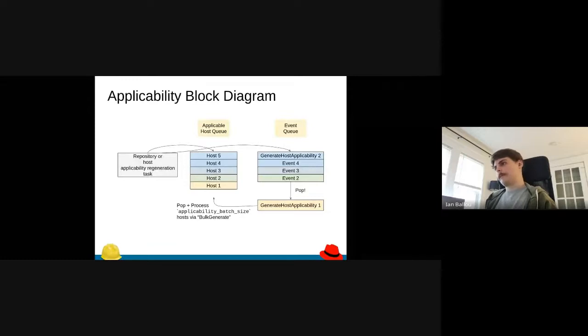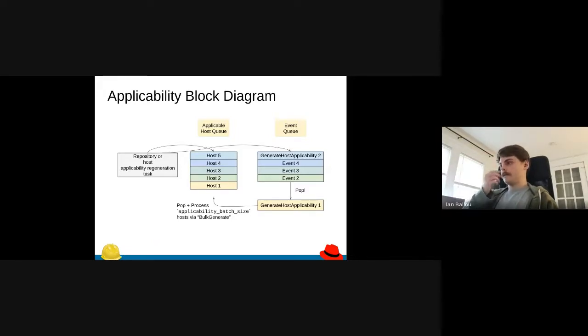This event queue will pop off a generate host applicability event, and then that will trigger the bulk generate action which will pop hosts off the queue and then process them. It'll pop off whatever you have that setting set to, and I'll talk a bit about tuning that later. It'll pop off that many hosts and then create an applicability generation action and it'll keep doing that until the queue is empty.